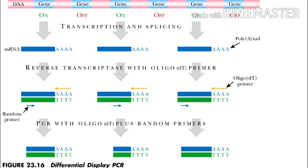Then a PCR reaction is run with two primers. First, an oligodT primer that binds to the 3' end of all cDNA copies of messenger RNA. Second, since the sequences at the other end of the mRNA molecules are unknown, the second primer is actually a mixture of random primers similar to those used in RAPDs.